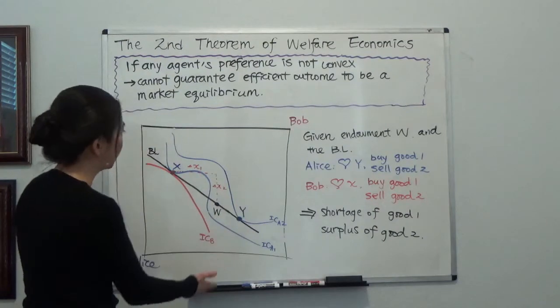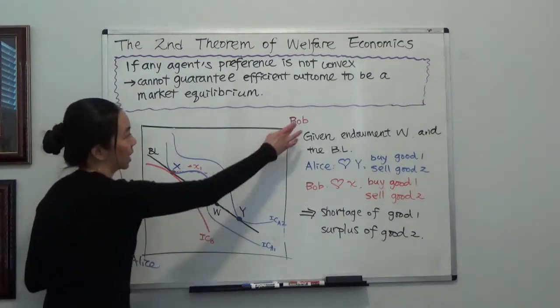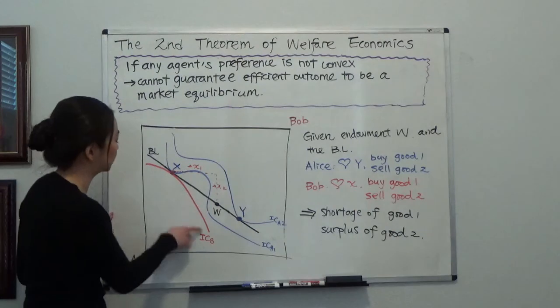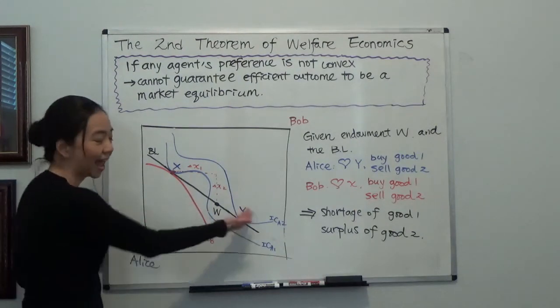So in this example, we have Alice and Bob, and you can see that Bob's preference is a convex preference, but not Alice's preference.